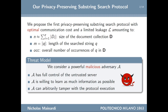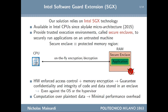In this work, we consider a powerful malicious adversary that has full control over the untrusted server and is able to literally interfere with the protocol execution in order to learn as much information as possible. Our solution relies on SGX technology, which is available in Intel CPUs since the Skylake microarchitecture. SGX provides trusted execution environments which are called secure enclaves, and that allows to securely run applications over an untrusted machine.